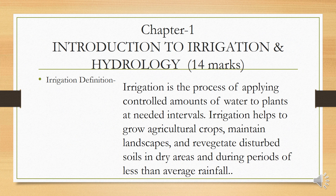Let's start with our first chapter, Introduction to Irrigation and Hydrology. First, we will discuss the definition of irrigation. Irrigation is the process of applying a controlled amount of water to plants at needed intervals. Irrigation helps to grow agricultural crops, maintain landscape, and irrigate distributed soil in dry areas and during periods of less than average rainfall. In simple language, irrigation means applying water to an agricultural area or a farm.